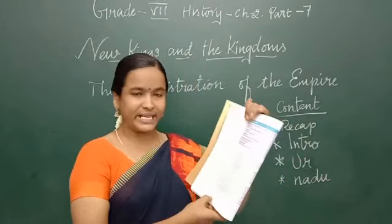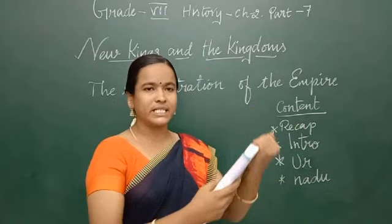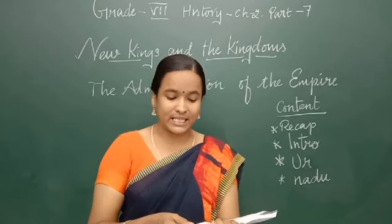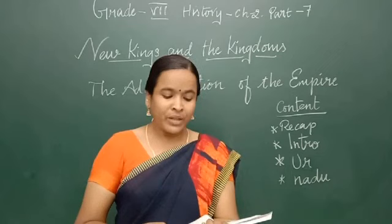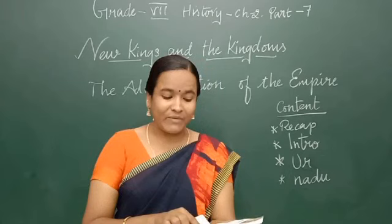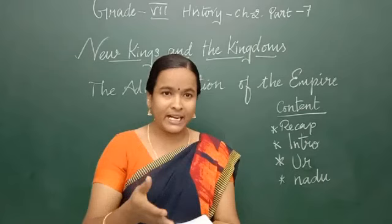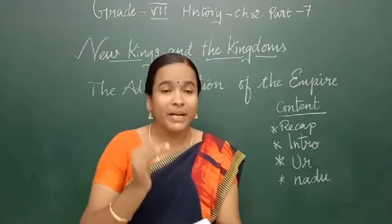Children, please take page number 26 in your history book. There is a box: Types of Land. Chola inscriptions mention several categories of land. First is Vellan Vagai — the land of non-Brahmana peasants, meaning land owned or held by non-Brahmana peasant proprietors.